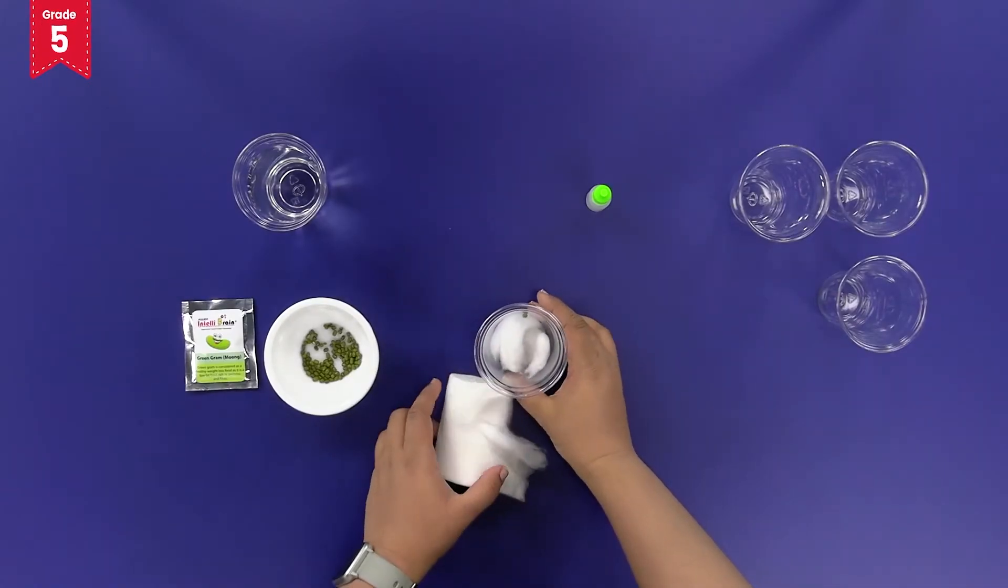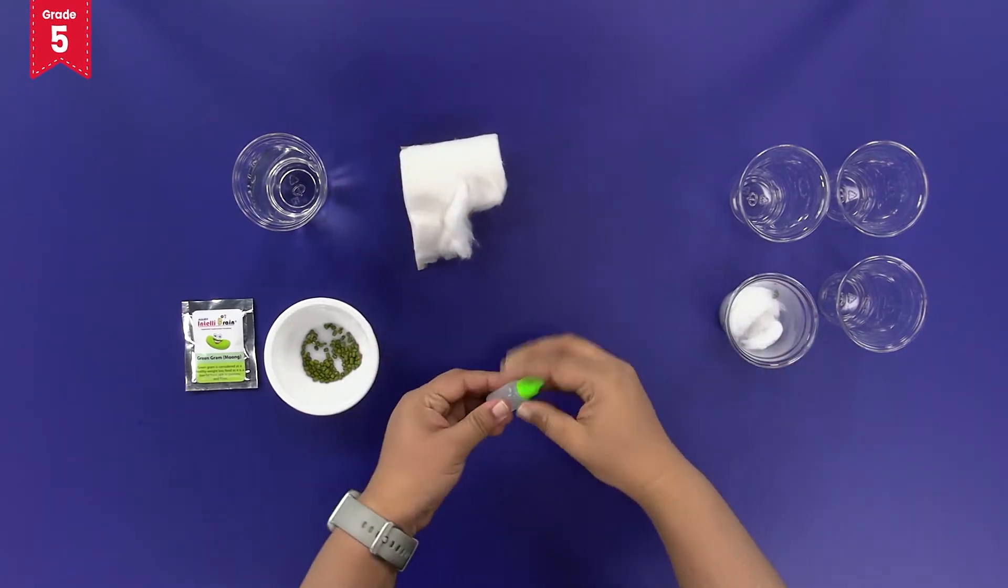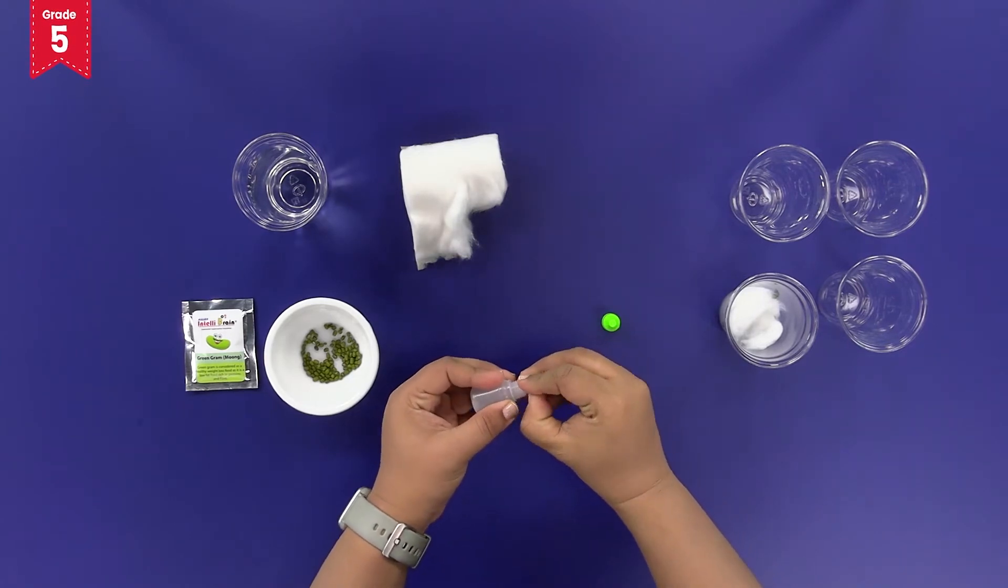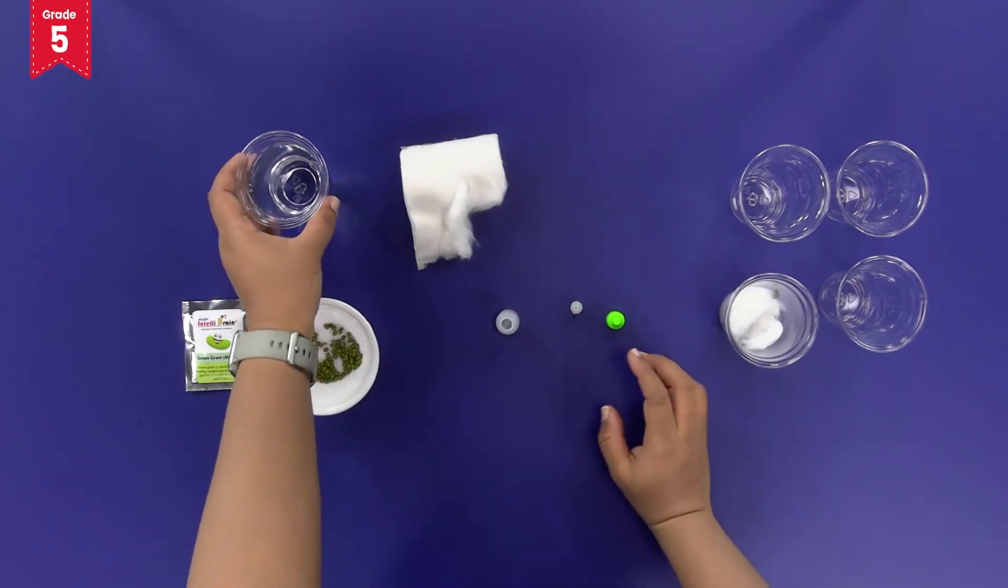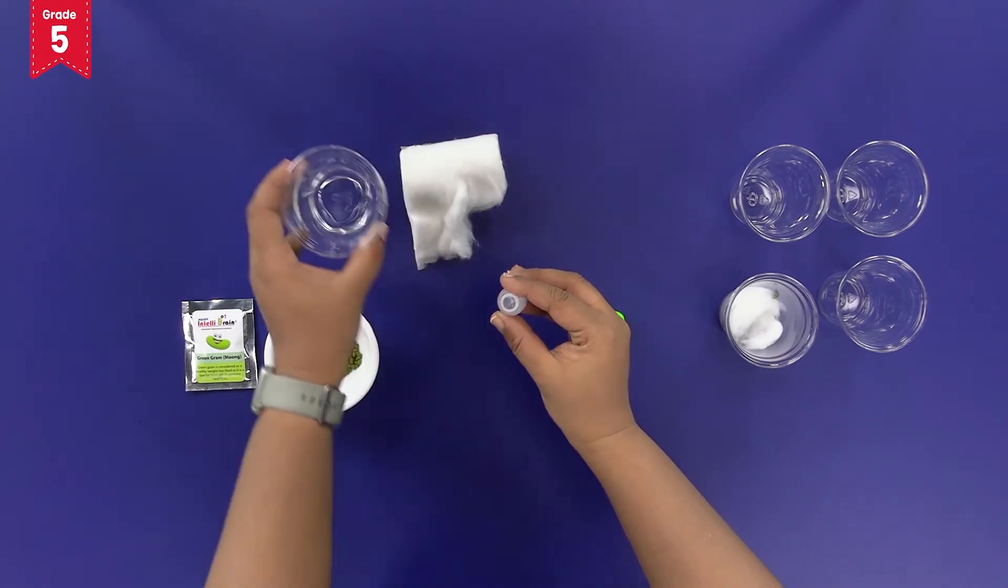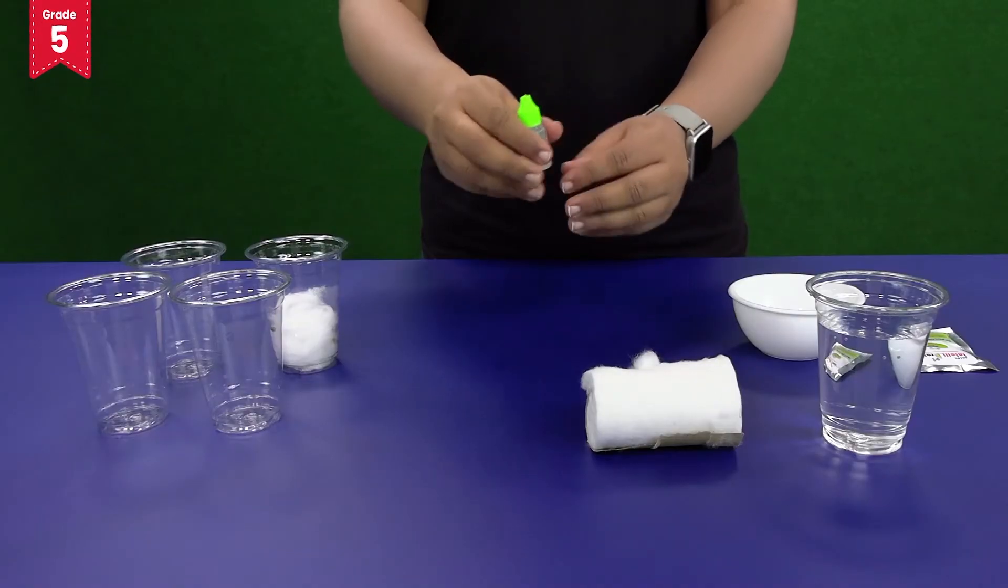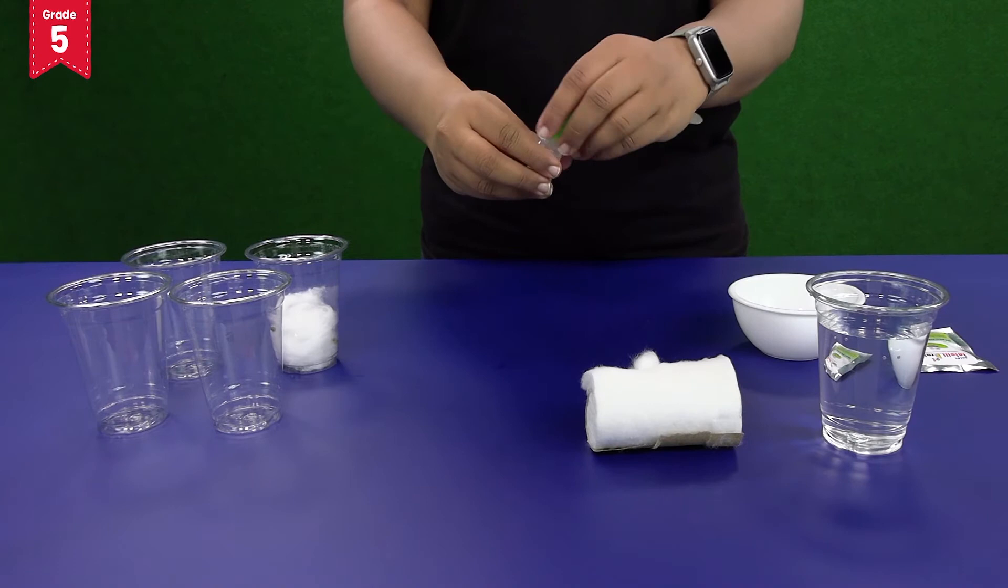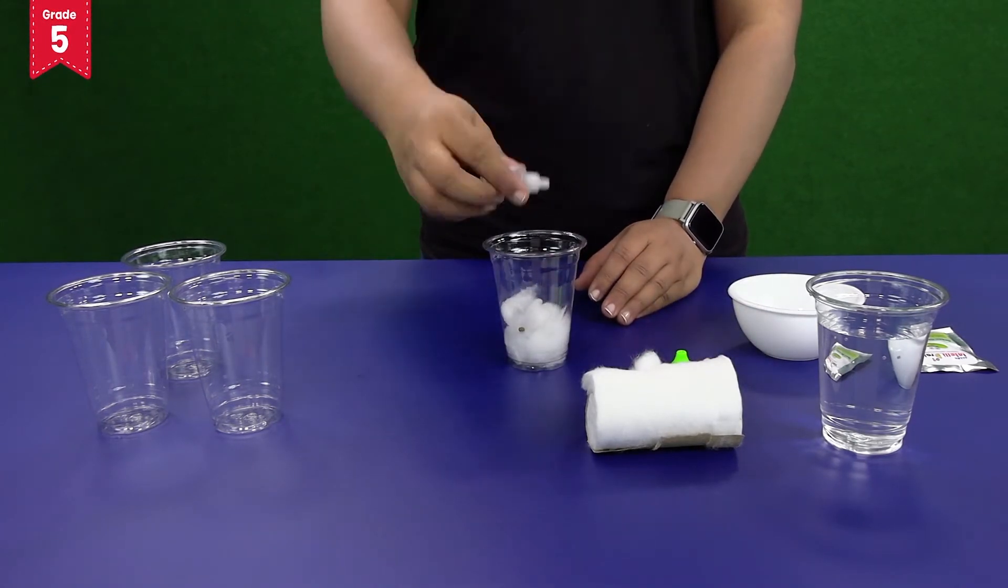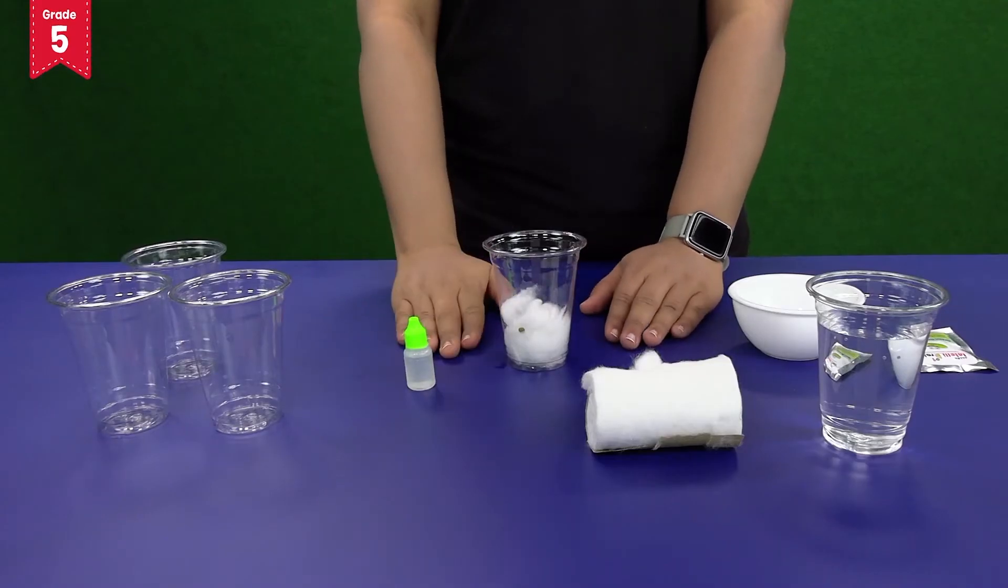Let's keep it aside for a while and take the dropper bottle. Open the bottle like this and fill it with water. Now, add 10 drops of water to the glass. Your specimen is now ready.